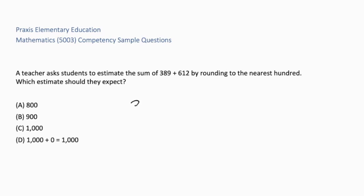So if we take 389 and round to the nearest hundred, we're going to underline the 3, look to the right. 8 is higher than 5, that means we're going to round its neighbor, the underlined number, to 400. And we're going to take 612, underline the hundreds place, look to the right. 1 is 4 and below, so the underlined number will stay the same. We now have 600. If we add them together, the correct answer is C, 1,000.